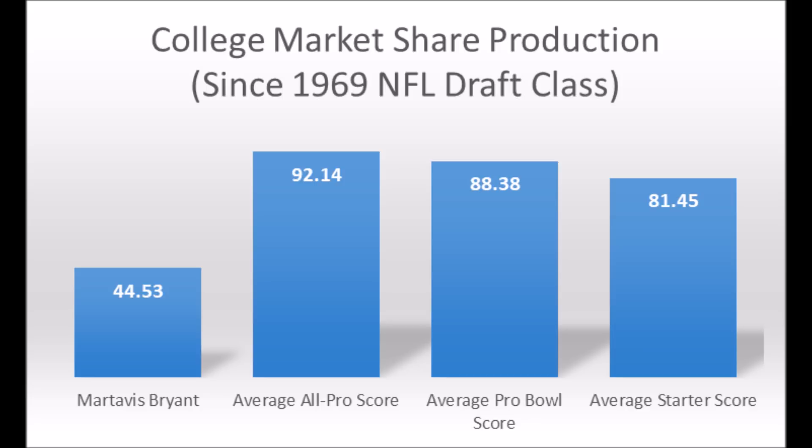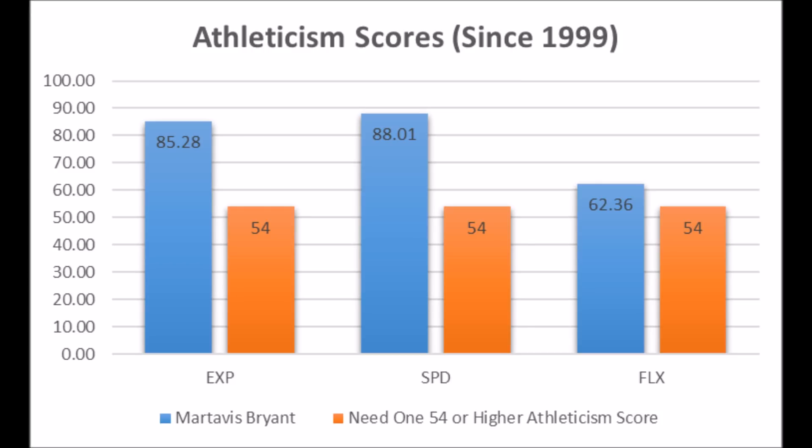Bryant does have some good athleticism traits: 85.28 in terms of explosiveness, 88.01 in terms of speed, and 62.36 in terms of flexibility testing. He has impressive explosion and speed traits — he's kind of like a Randy Moss-type athlete, which is why some people call him 'Mostavius Bryant.'